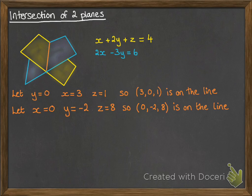And now we have two points on the line. We can find the vector equation that runs between those two points.